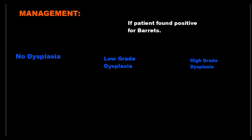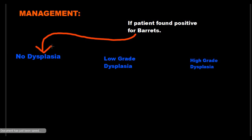Once we have confirmed that the patient has Barrett's, there are three possible scenarios. First, if metaplasia has occurred but dysplasia has not yet happened, we simply give high doses of proton pump inhibitors and reassure the patient.